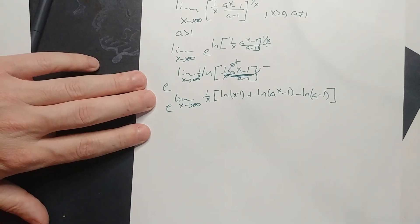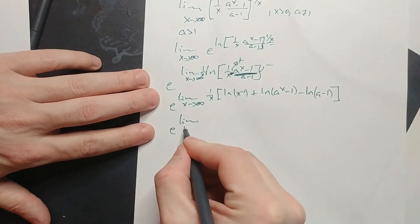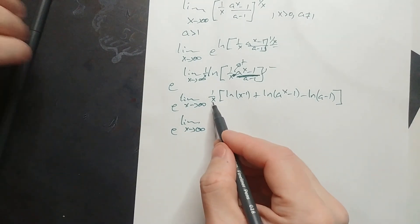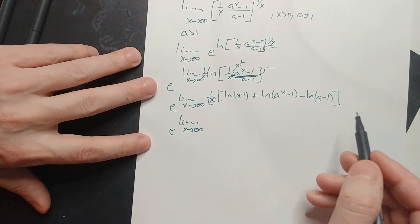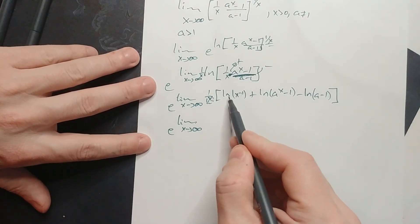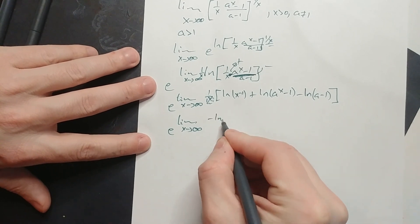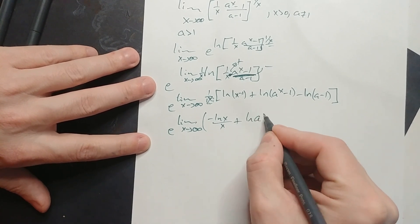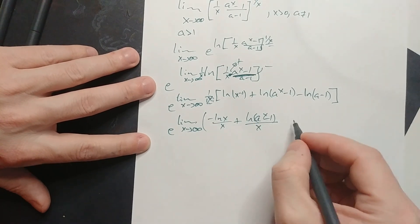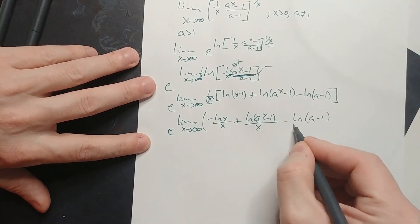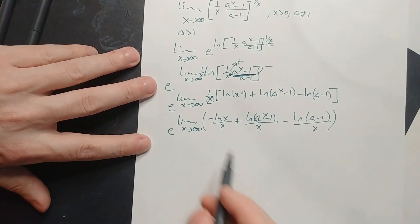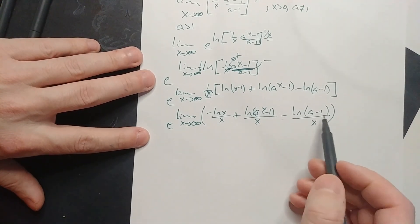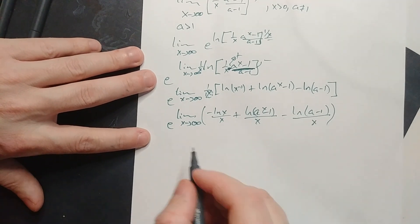It's a gnarly looking expression, but we can handle it. We take the x in the denominator and distribute it across each term, pulling the negative 1 out front. We end up with: negative ln(x) over x, plus ln(a to the x minus 1) over x, minus ln(a minus 1) over x. We can distribute the limit to each expression and work them independently.